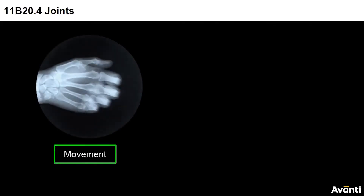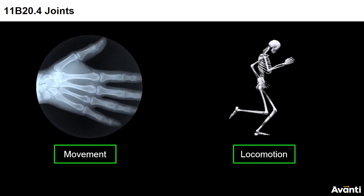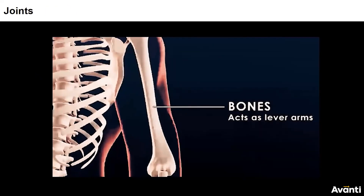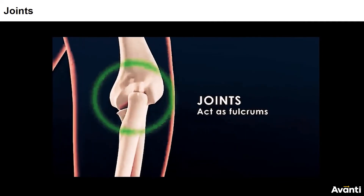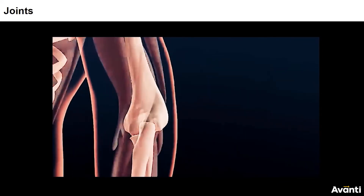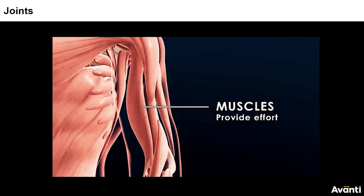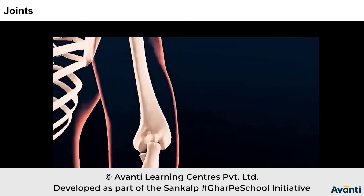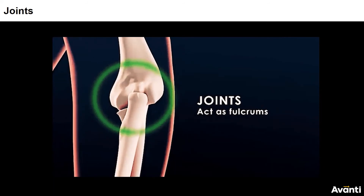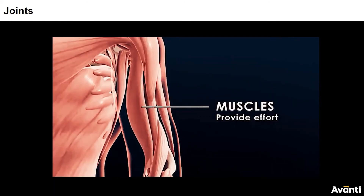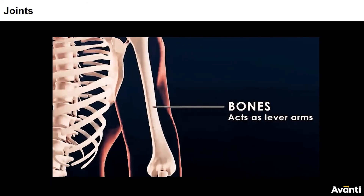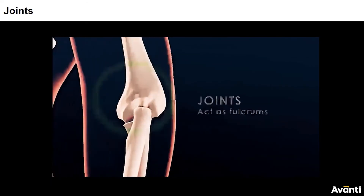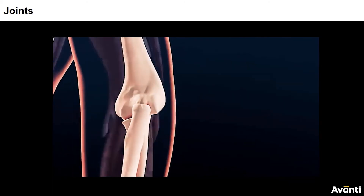Class, joints. Joints are very important for movement as well as for locomotion. The joints are the point of contact between bones and cartilage. The muscles generate force, which carries movement through joints. Thus, the joint acts as a fulcrum.